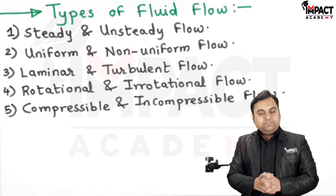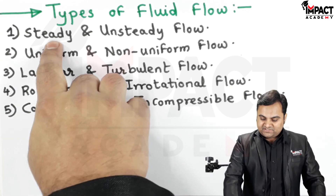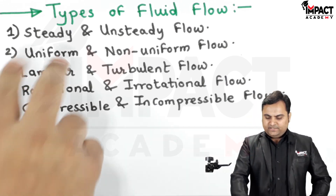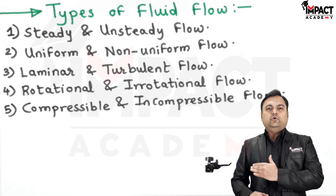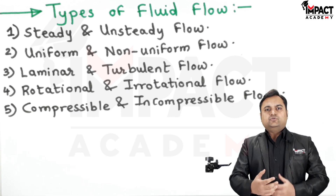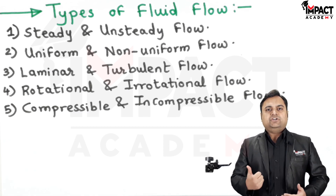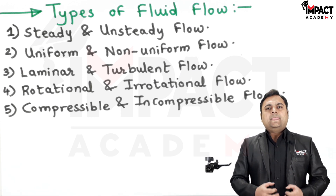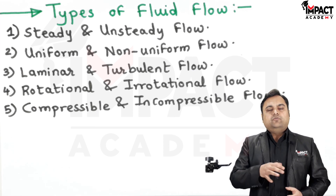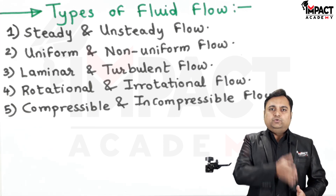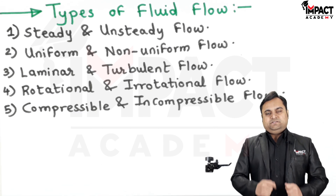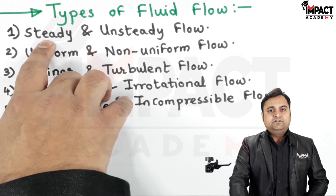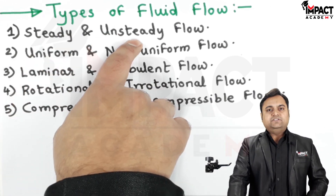These are the different types of flow. First is steady and unsteady flow. In case of steady flow, while the fluid is flowing, the values or properties of the fluid — like pressure, velocity, temperature, flow rate, discharge, and mass flow rate — all properties would remain constant with respect to time. So whenever the properties remain constant with respect to time, it is called steady flow.